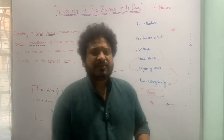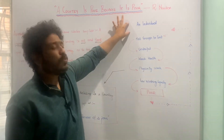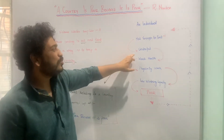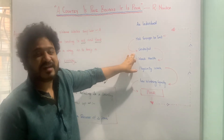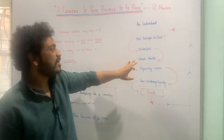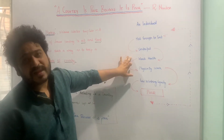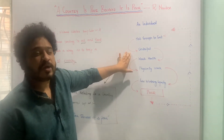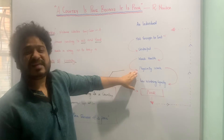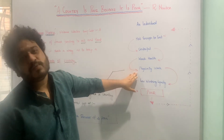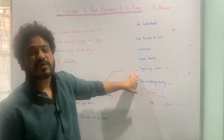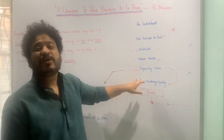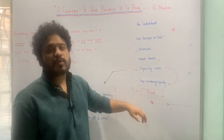Let us assume that there is an individual who does not have enough to eat, and this results in him or her being underfed. As a result of that, that particular individual has weak health, and this translates into something called physical weakness. This physical weakness will lead to his or her contribution going down towards the process of production.